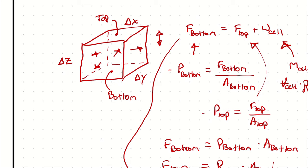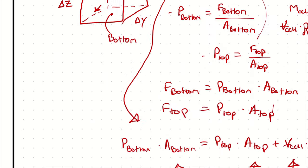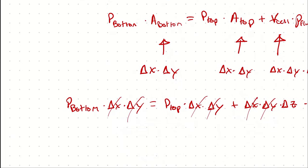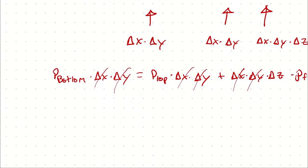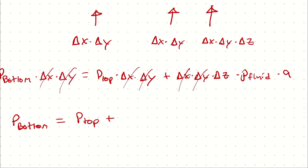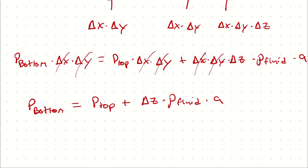I'll point out that this breaks down at very small scales because capillary effects have a non-negligible impact on the fluid's characteristics. But in general, we can describe the pressure at the bottom as equal to the pressure at the top plus Delta Z (the height of the fluid) times the density times the acceleration the fluid is experiencing.